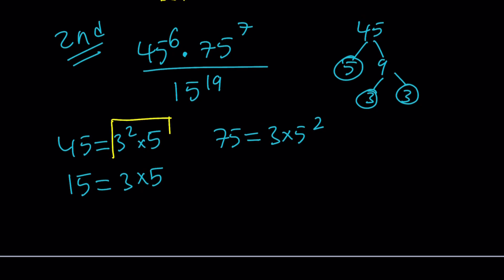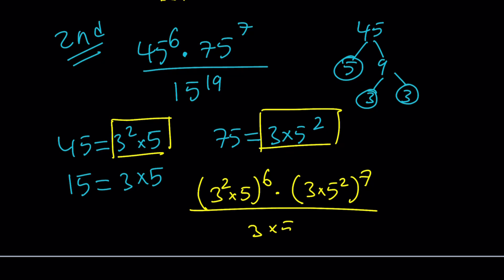So we're going to replace 45 with 3 to the second times 5, and of course we're going to raise it to the sixth power. And then we're going to replace 75 with 3 times 5 to the second power and we're going to raise it to the seventh power. And finally at the bottom we have 3 times 5, and that product is going to be raised to the 19th power.